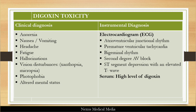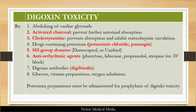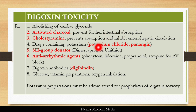To manage digoxin toxicity, first you need to abolish the cardiac glycoside — stop giving the drug. You can also give activated charcoal to prevent further intestinal absorption, and cholestyramine to prevent absorption and inhibit enterohepatic circulation.